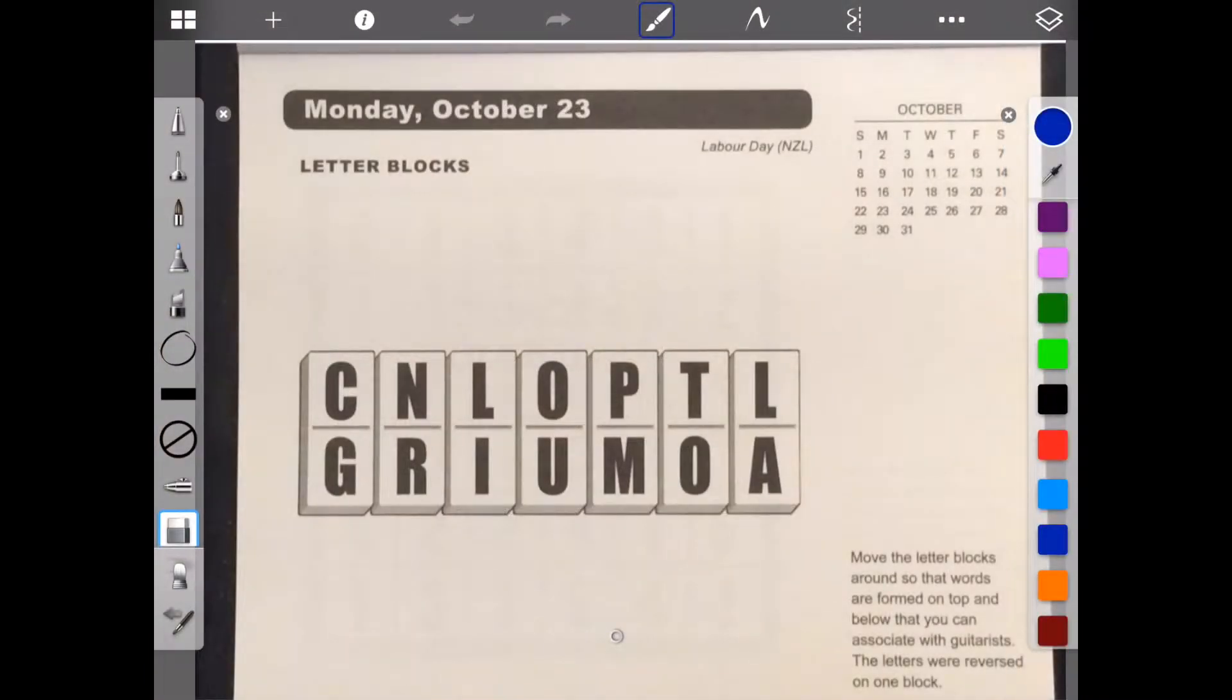Hello, welcome to Brain Games Calendar 2017. We're in week 43, day one. We have letter blocks. Move the letter blocks around so that words are formed on top and below that you can associate with guitarist. The letters are reversed on one block. Let's see what we have here. Words that you can associate with guitarist.